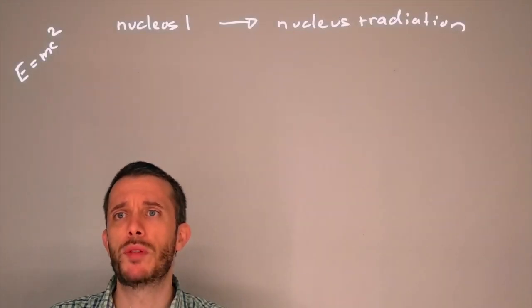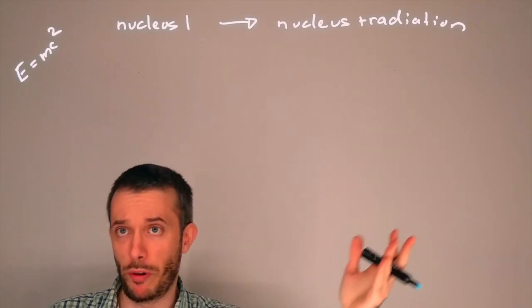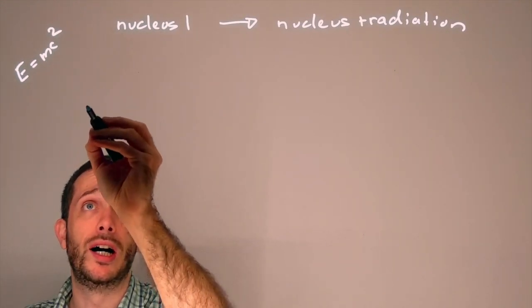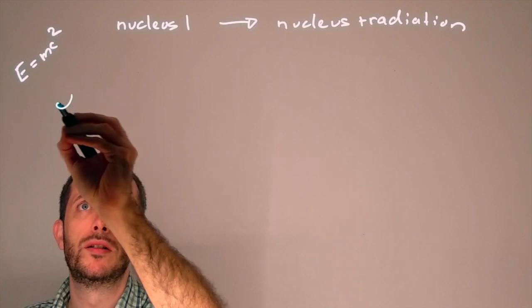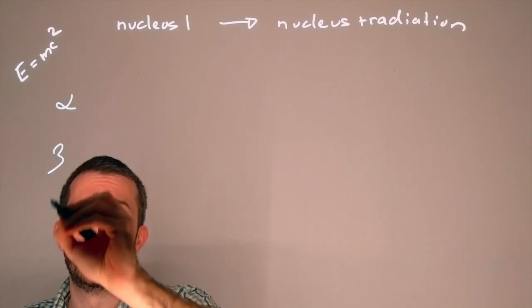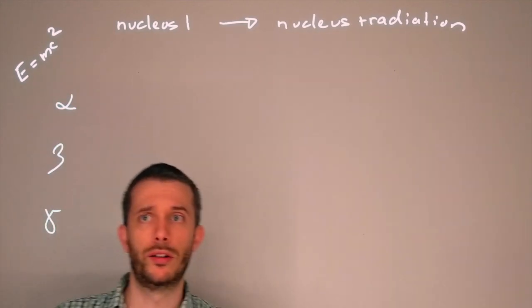There are several types of radioactivity. Three of the more famous ones are alpha, beta and gamma radiation.